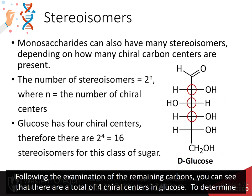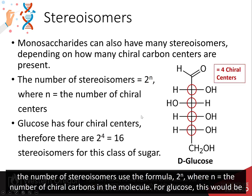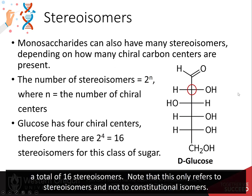To determine the number of stereoisomers, use the formula 2 to the N, where N equals the number of chiral carbons in the molecule. For glucose, this would be four chiral centers for a total of 16 stereoisomers. Note that this only refers to stereoisomers and not to constitutional isomers.